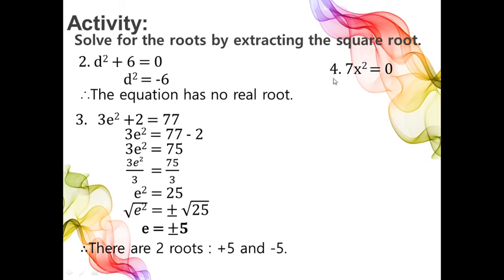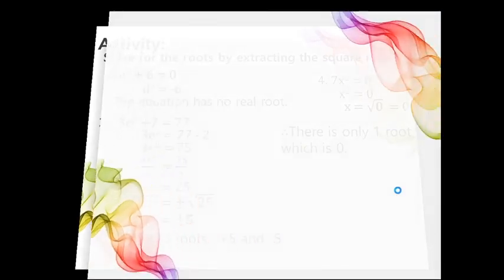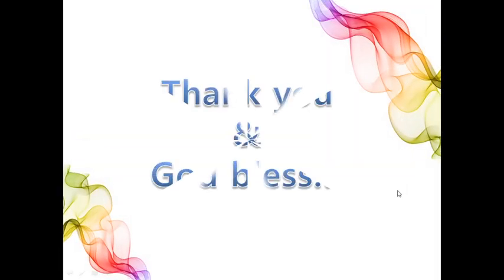For number 4, we have 7x squared equals 0. We divide both sides by 7, so x squared equals 0. Since k is equal to 0, there is only one root, which is 0. That ends our lesson. For your handouts and worksheets, kindly visit our webpage. Thank you and God bless.